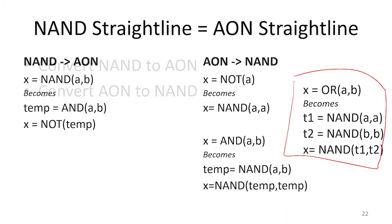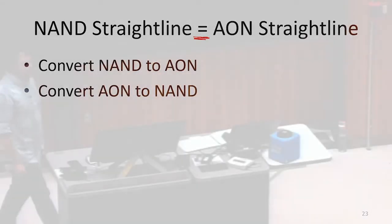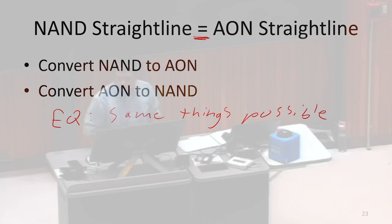So we have shown NAND straight-line programs and AND, OR, NOT straight-line programs are in some sense equivalent because anything we could write with one, we can write with the other. In what way might they not be equivalent? Can anybody think of any ways that they might not be equivalent? They are equivalent in the sense that anything one can do, the other can do as well. So they have the same things are possible. So in that sense, they are equivalent because the same things are possible.